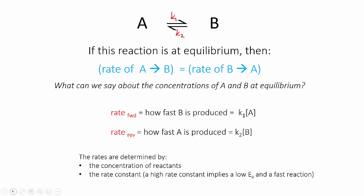Note that the rates each depend on two things: the concentration of the reactant and the rate constant. Recall also from kinetics that a high rate constant implies a reaction with a low activation energy, and therefore it must be a reaction that has a high probability of successful collisions.